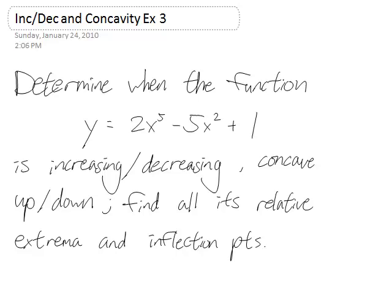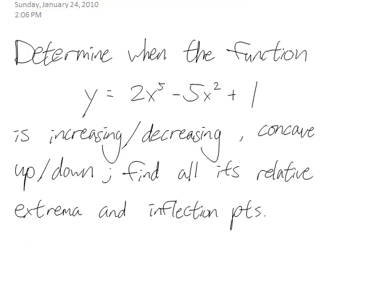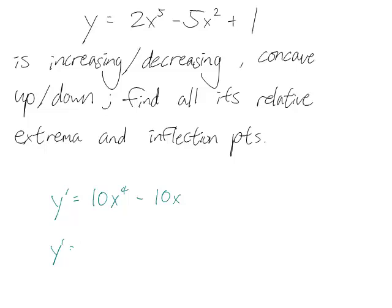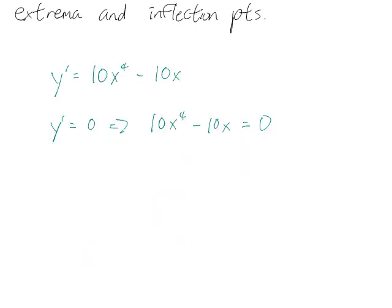As usual, we start by taking the derivative, which will give us the increasing and decreasing bits. y prime is 10x to the fourth minus 10x, so y prime equal to zero implies 10x to the fourth minus 10x equals zero. We want a critical point, so we want y prime undefined or zero. It's never undefined, so let's just set it equal to zero. We can divide through by the 10 and factor out x.